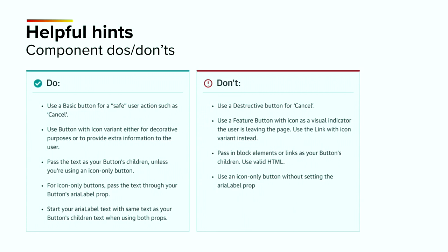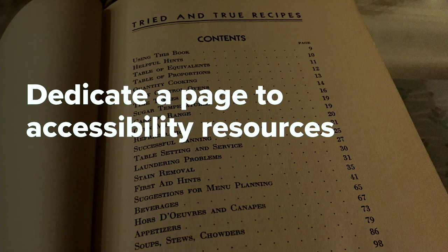Add do's and don'ts to your components to help your developers implement things correctly. This is a developer experience thing, but we also have to remember we're thinking about the end user experience — the developer do's and don'ts help developers implement something correctly so the end user experience is also awesome. Also, dedicate a page to accessibility resources. Don't force your team to hunt through WCAG to understand all the success criteria — curate sources for them so it feels like a one-stop shop to develop with inclusion in mind.